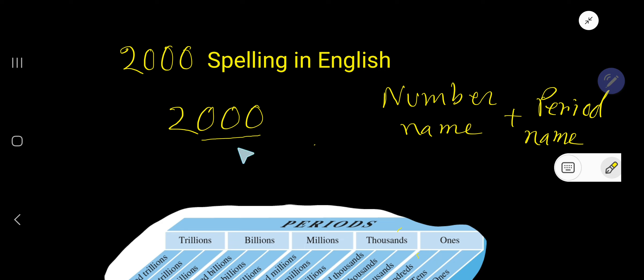These three digits make a period which is called the ones period, and this digit makes a period which is called the thousands period. In the thousands period we are getting the number two, so the number name is two. Then we have to write the name of the period.